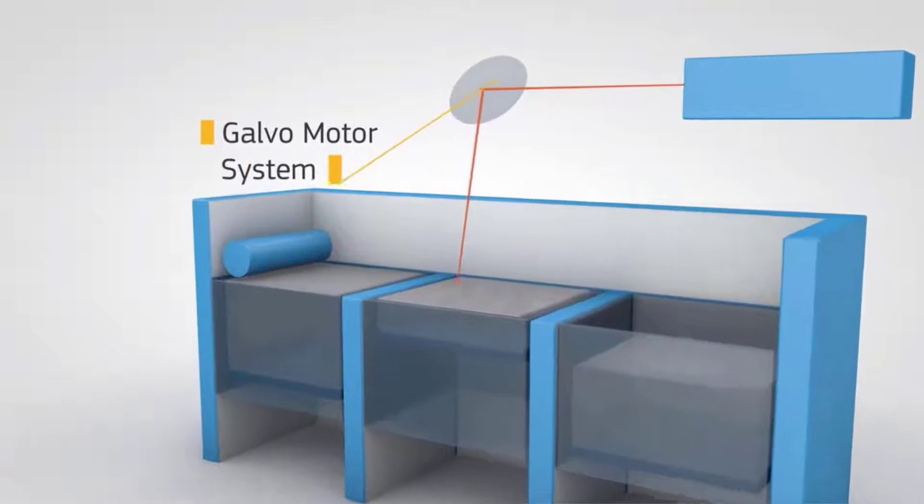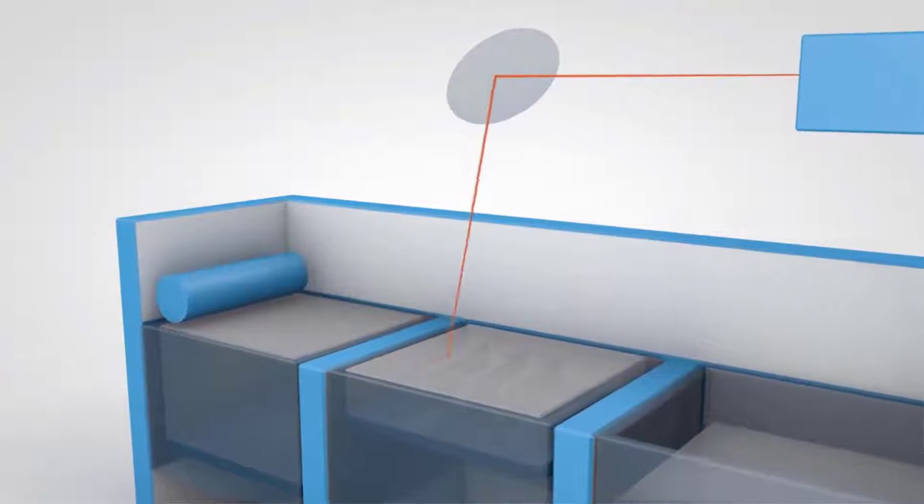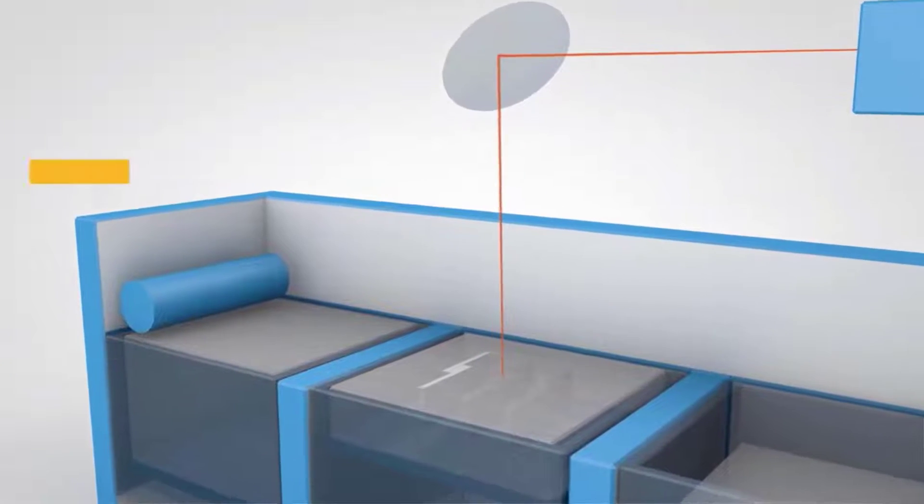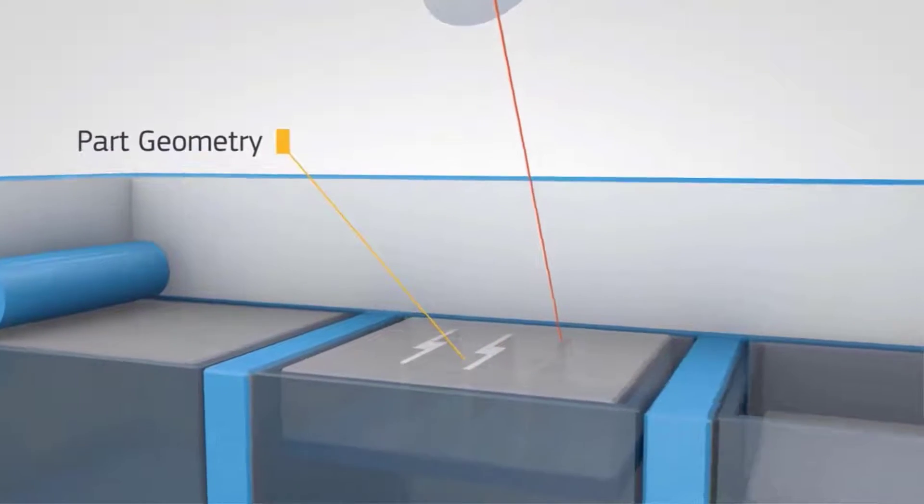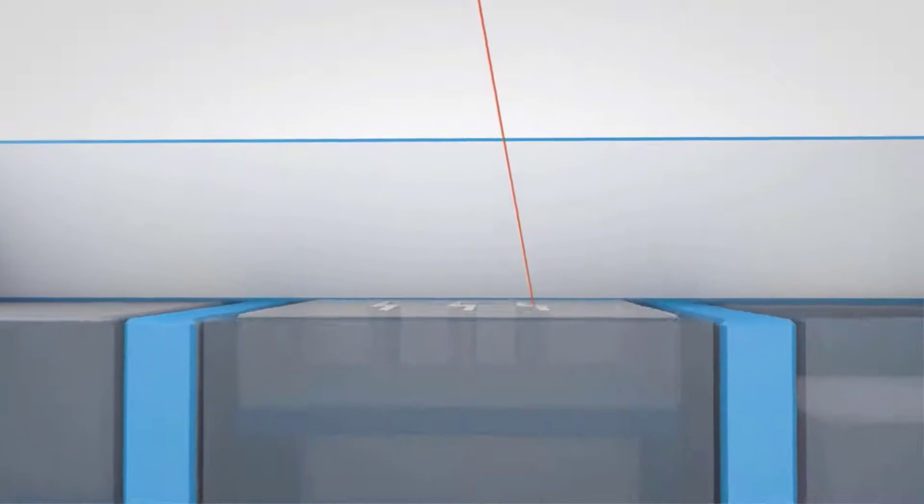When our laser beam hits the powder, the powder will melt and both will fuse together and make a layer. So here as well, your parts will be created layer by layer.